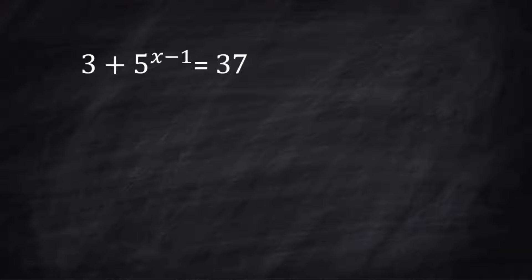Let's take a look at this one. There's a little bit of work we can do before we decide how we have to do it. I need for the 5 with the exponent to be on its own on this side, so we're going to take 3 away from both sides first. 5^(x-1) = 34.